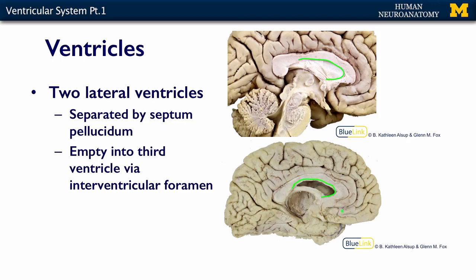The cerebrospinal fluid in the two lateral ventricles flows into the midline third ventricle via a tiny little opening called the interventricular foramen. In the next section of this lecture, we'll talk about the midline structures of the third ventricle, the fourth ventricle, and then we'll talk more about the flow of cerebrospinal fluid.